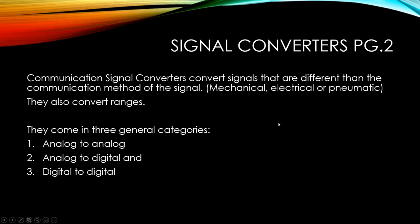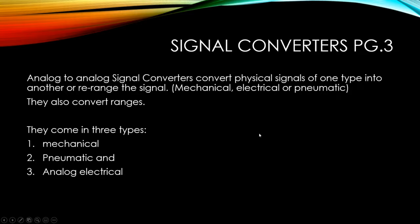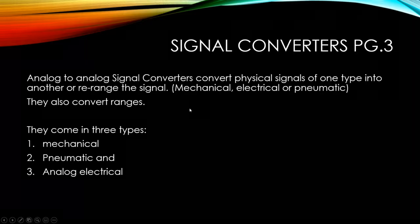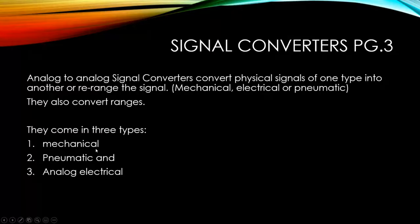Signal converters convert signals that differ from the communication method of the signal, and they also convert ranges. They come in three general categories: analog-to-analog converters, analog-to-digital converters, and digital-to-digital converters. Analog-to-analog signal converters convert physical signals of one type into another — whether mechanical, electrical, or pneumatic — and they can also rearrange or convert ranges. Analog converters come in three basic types: mechanical, pneumatic, and analog electrical.